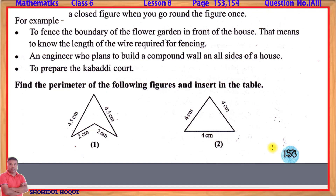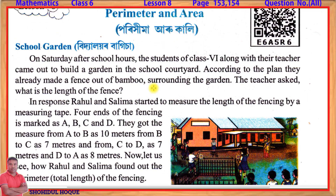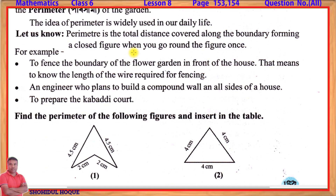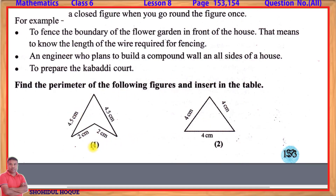Page number 153. Lesson 8 covers the first two pages — lesson 8 on perimeter and area. The problem involves figure number 1 and figure number 2. Figure number 2, page 154, question 2: find the perimeter of the following figures and insert the table. The perimeter table includes figures up to page 154.